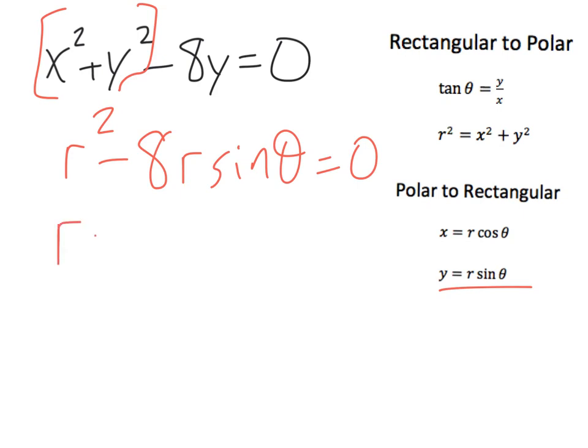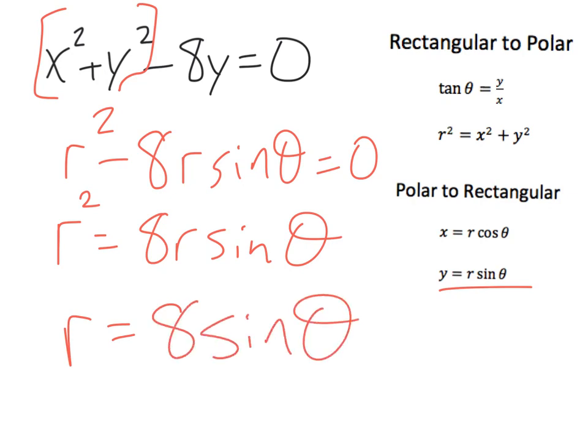And so I can say r is equal to, well r squared is equal to 8 r sine theta. Once again we want to solve for r. In rectangular you're losing a variable you lose solutions but that's not a problem in polar and so we have r is equal to 8 sine theta.